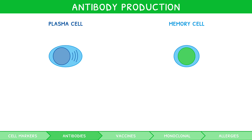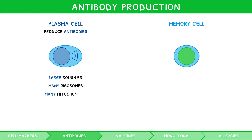Plasma cells produce antibodies. They therefore contain a large rough endoplasmic reticulum, many ribosomes, and many mitochondria. Memory cells, as their name implies, remain in the blood to provide immunological memory.